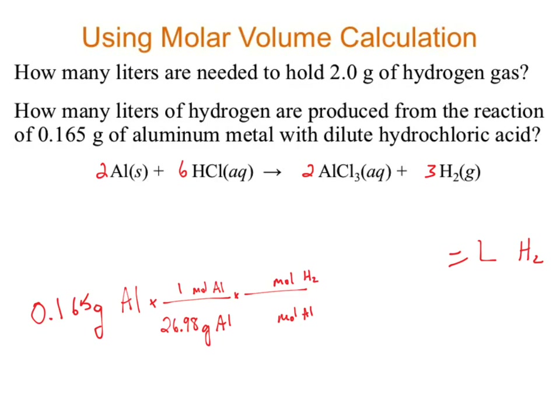My moles of hydrogen isn't what I want — I want liters of hydrogen. Where do I find that conversion? That would be true if at STP. Again, it's a crappy question because it doesn't specify. If we say this is all running at STP, I can drop that information in: 22.4 liters is one mole.